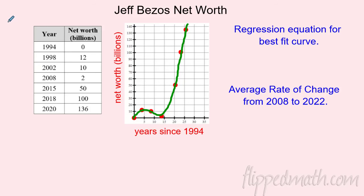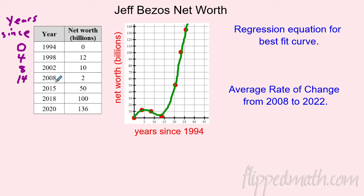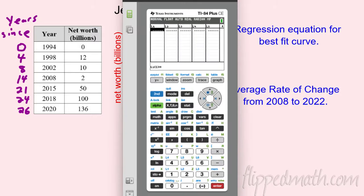We're going to add a new column: 'years since 1994.' That just makes it easier to enter in the calculator. So 1994 would be zero, 1998 would be four years later, 2002 would be eight, then six years later, seven years later, and so on. 2020 is 26 years after 1994. We add this little column because it's going to be nice and clean for our calculator.